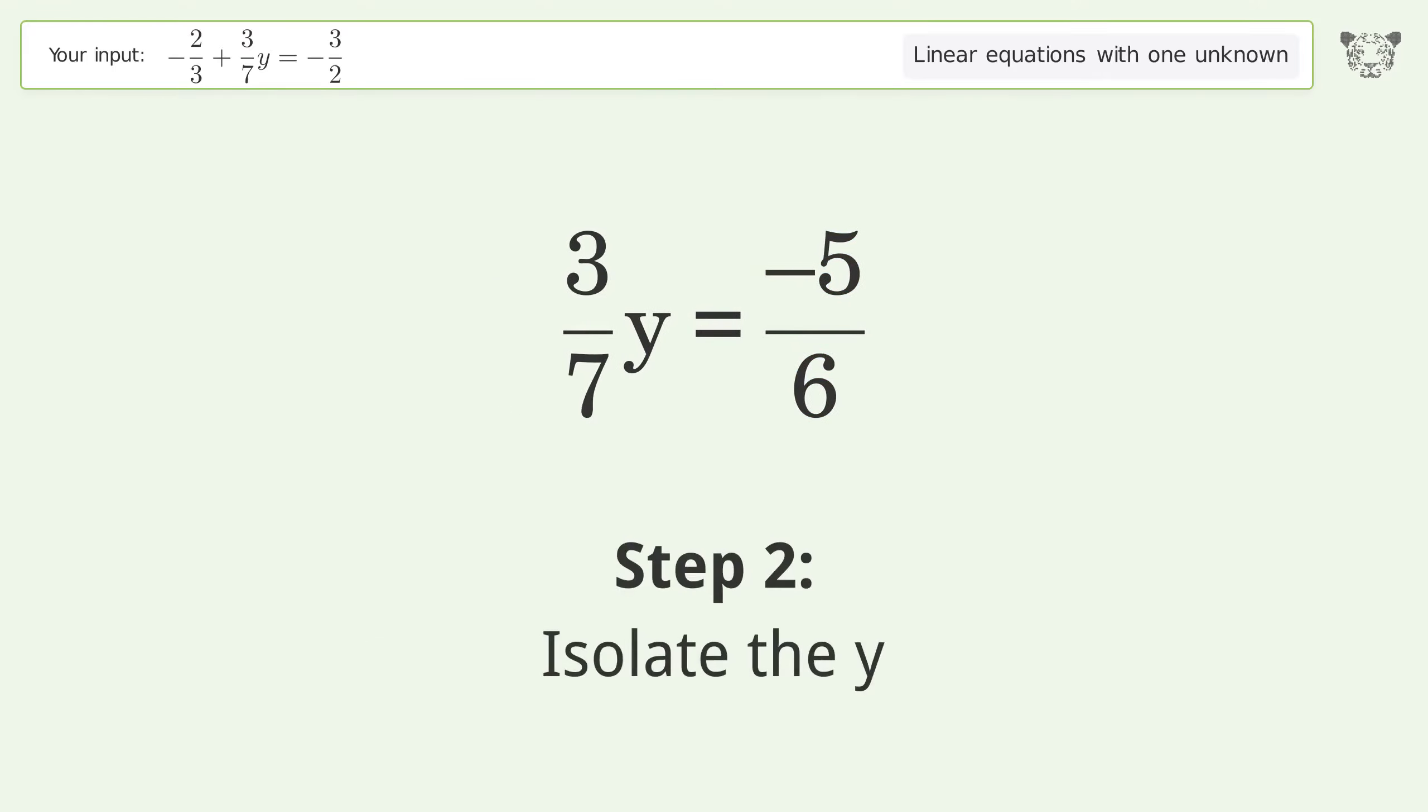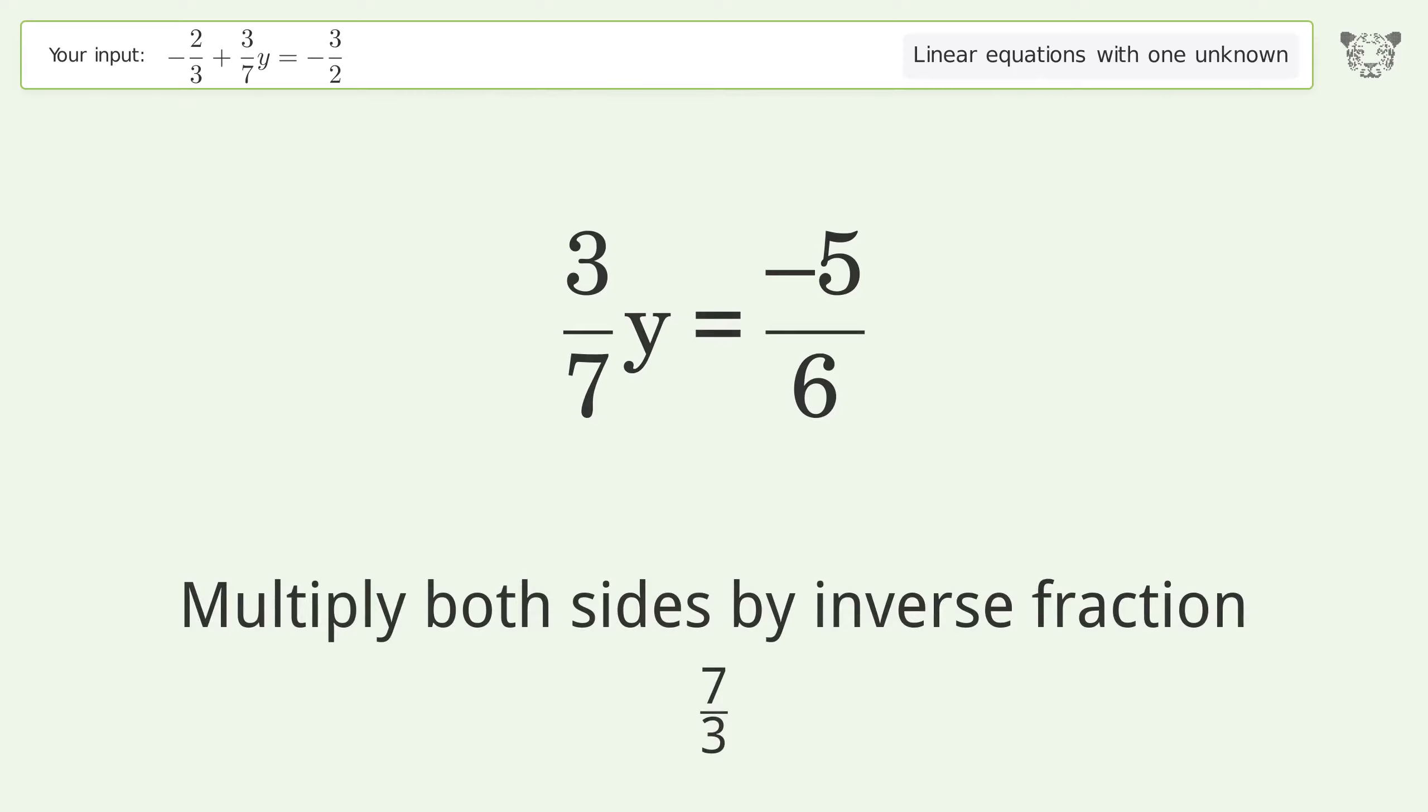Isolate the y. Multiply both sides by the inverse fraction 7 over 3.